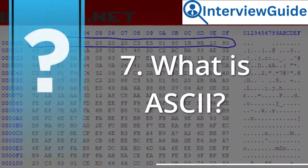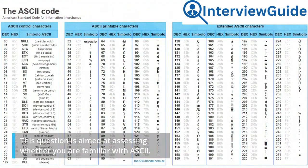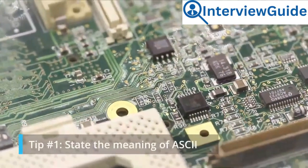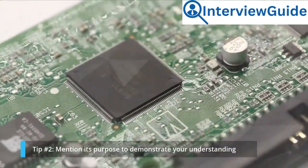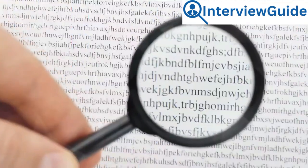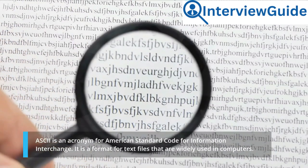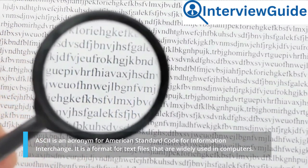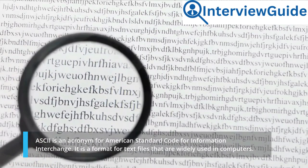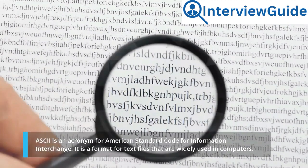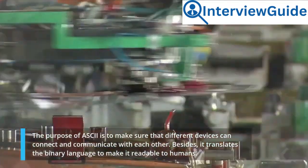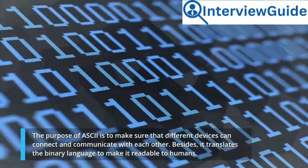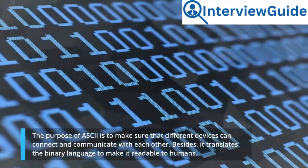Question 7: What is ASCII? This question is aimed at assessing whether you are familiar with ASCII. Tip number 1: state the meaning of ASCII. Tip number 2: mention its purpose to demonstrate your understanding. Sample answer: ASCII is an acronym for American Standard Code for Information Interchange. It is a format for text files that are widely used in computers. The purpose of ASCII is to make sure that different devices can connect and communicate with each other. Besides, it translates the binary language to make it readable to humans.